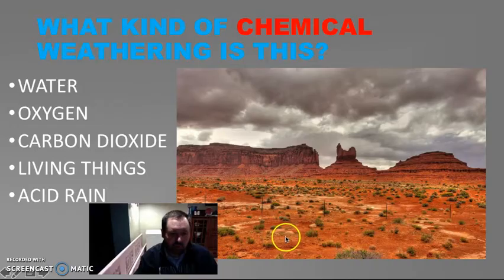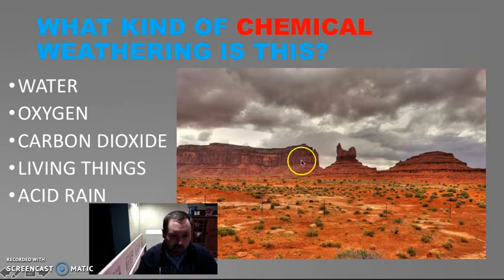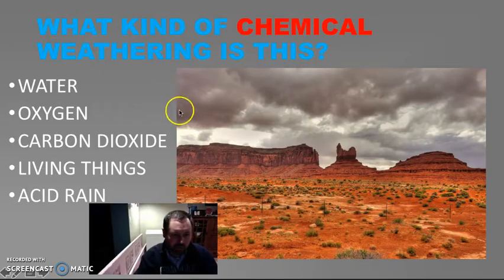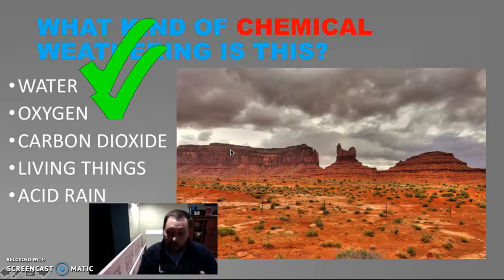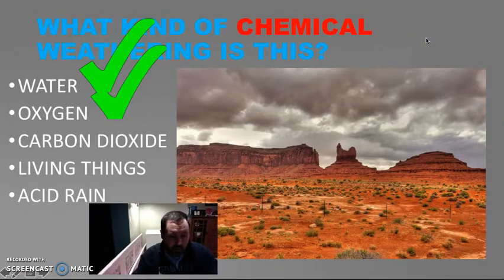Take a look at this — we've got really red dirt. What's causing it to weather? These rocks are breaking down into smaller pieces. What caused that? It's water and oxygen. When oxygen mixes with the iron, it makes kind of a reddish color.